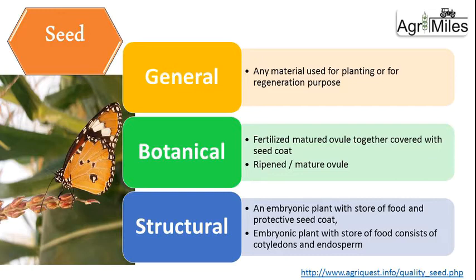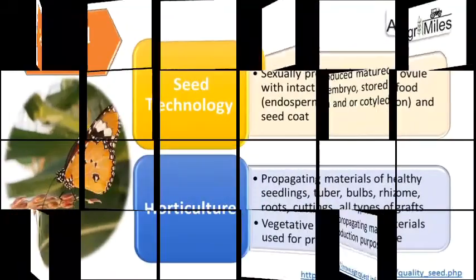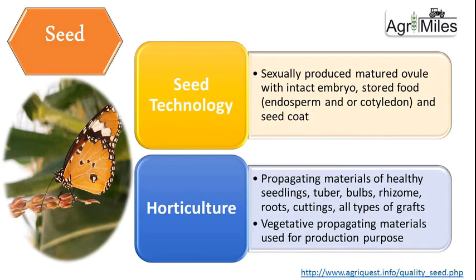On a structural basis, seed can be defined as an embryonic plant with stored food and a protective seed coat. It has three important components: the embryonic plant, stored food (which may be in the form of cotyledon or endosperm), and the protective seed coat. From a seed technology perspective, it is a sexually produced mature ovule with intact embryo, stored food, and seed coat — essentially the same as the structural perspective.